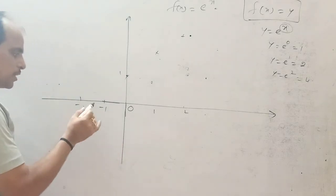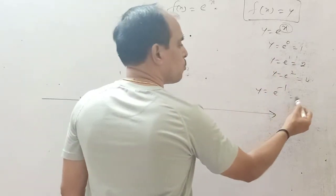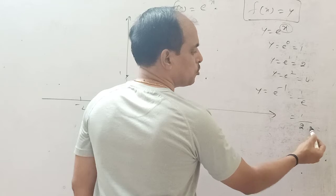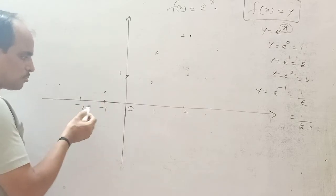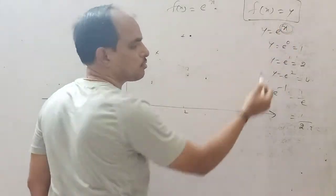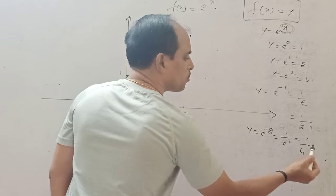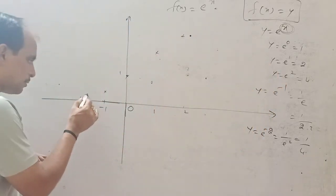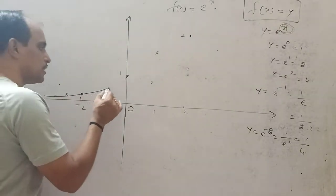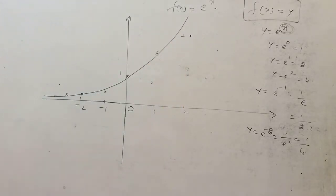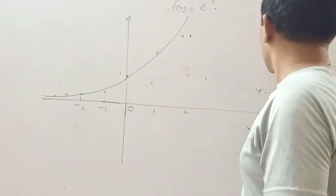For negative values: at x = -1, y = e^(-1) = 1/e, which is about 1/2.7 — a small fractional value. At x = -2, y = 1/e^2 = 1/4-point-something, so the value decreases further. It keeps decreasing but never touches the x-axis. The graph is increasing overall.